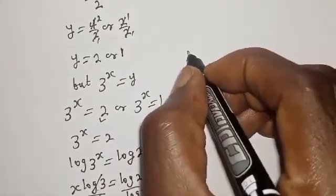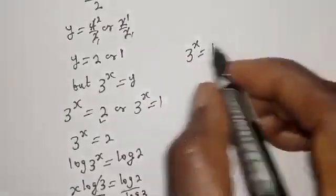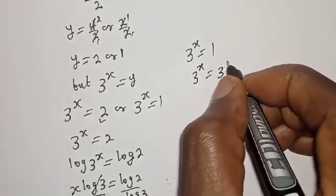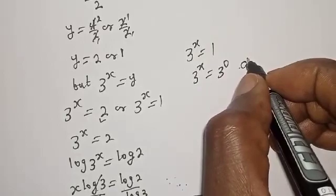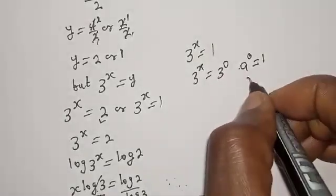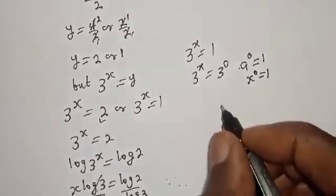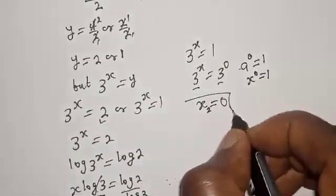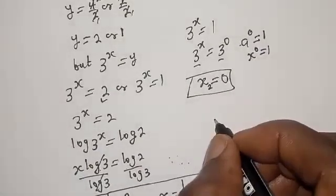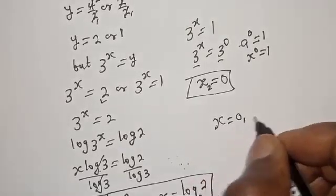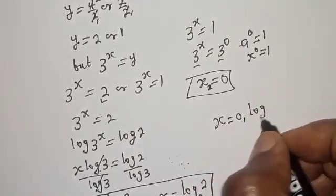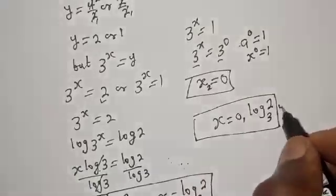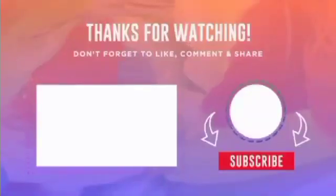From the second case, 3 raised to power s equals 1. We know that any base raised to power 0 equals 1, so 3 raised to power 0 equals 1. Therefore s equals 0. So our final answers are s equals 0 and s equals log base 3 of 2. If you enjoyed the class, please don't forget to like, share, comment, and subscribe. Thank you.